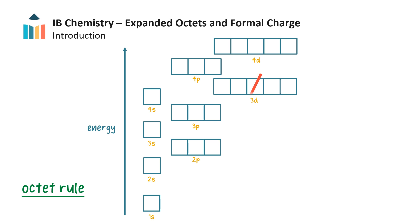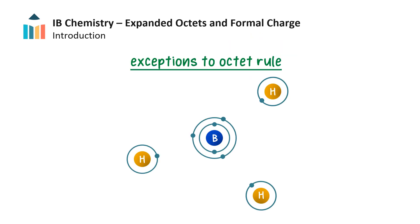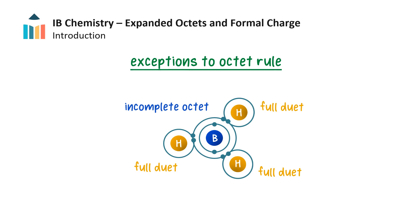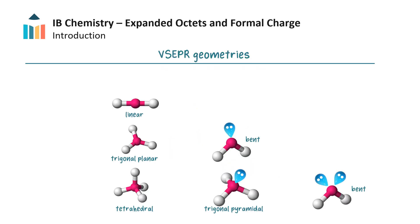The octet rule only applies to S and P electrons. A few exceptions are the first few elements on the periodic table, like hydrogen, which is stable with a full duet in its valence shell, and those elements like boron, which form stable compounds with an incomplete octet.